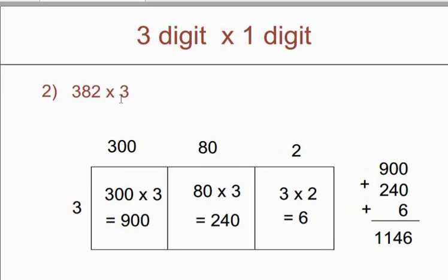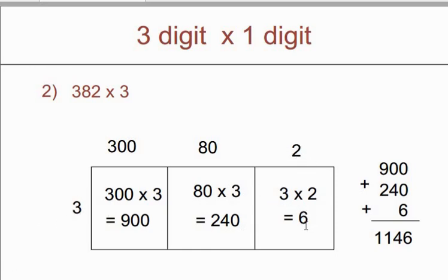Let's see another example of 3-digit by 1-digit number: 382 multiplied by 3. For 382 we write 300 plus 80 plus 2. Here also we need 3 boxes wide and 1 box high. Make a multiplication of 300 with 3 — we will get 900. Take 80 and 3 — we will get 240. Now summation of these 3 numbers: 900 plus 240 plus 6, so you will get 1146.